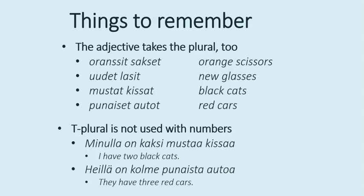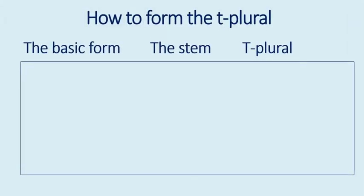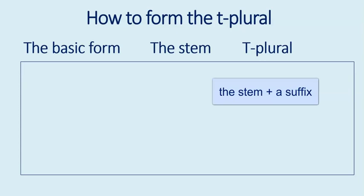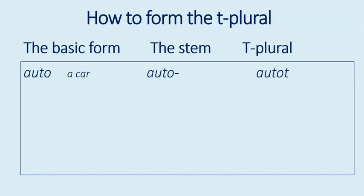Next, let's see how the T-plural is formed. Finnish nouns, adjectives, pronouns, and numerals can be divided into different groups. Each word has a dictionary form, a stem (vartalo in Finnish), and some words have two stems. We add case endings, also called suffixes, to the stem to convey different meanings. When forming the T-plural, it's often as easy as simply adding the letter T at the end of the word. For example: auto — the stem is auto, and we add T: autot. The letter T is the marker of the plural, similar to how the letter S works in English.